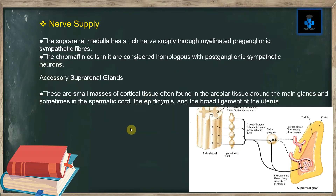Nerve supply: The suprarenal medulla has a rich nerve supply through myelinated preganglionic sympathetic fibers. The chromaffin cells in it are considered homologous with postganglionic sympathetic neurons.